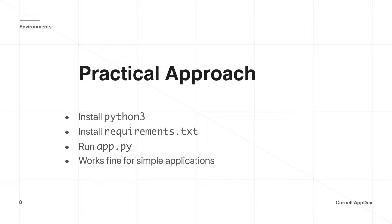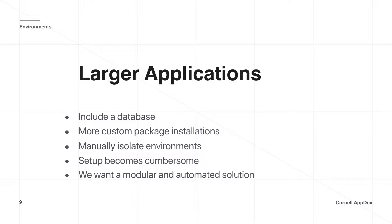A practical approach has been: install Python 3, pip install requirements from the text file, then run application.py. But this is heavily dependent on what machine you're using and quite manual. For larger applications we may include a database, different systems requiring separate package installations, and requirements.txt files approaching dozens or even 100 packages. With so many things going on, keeping everything isolated and clean becomes cumbersome — we want a more automated and modular solution.